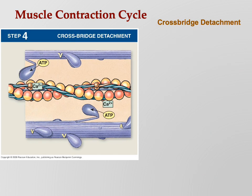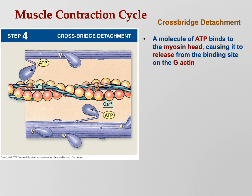Step four: cross-bridge detachment. A molecule of ATP binds the myosin head, causing it to release from the binding site on actin. What causes the myosin head to let go? ATP. You might think - wait, didn't we just have ATP? We did, but that ATP had already been hydrolyzed into ADP and a phosphate, and when we released those that provided the energy to row the filament. Now we need a new ATP to make the myosin head let go.